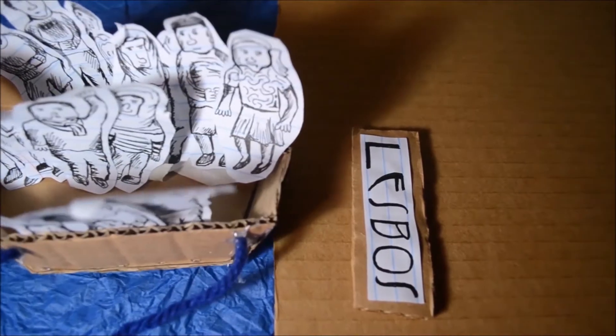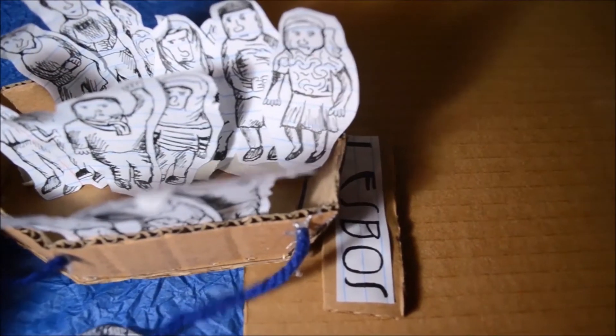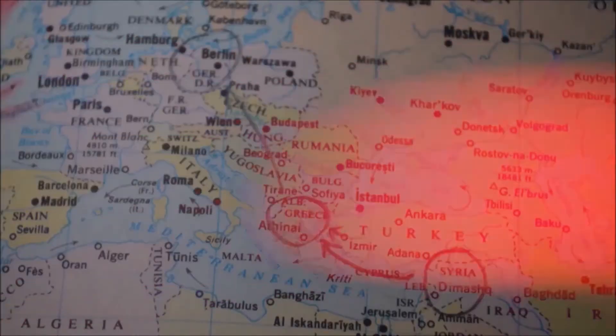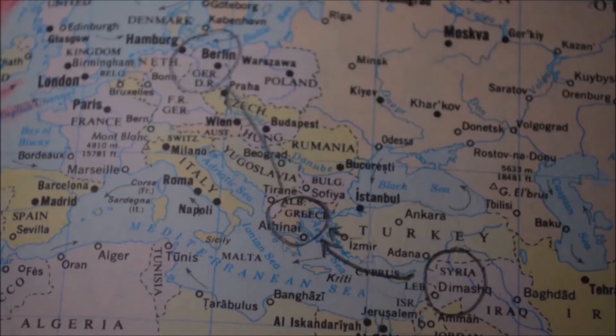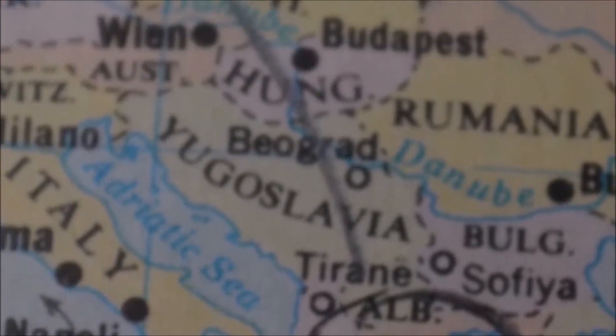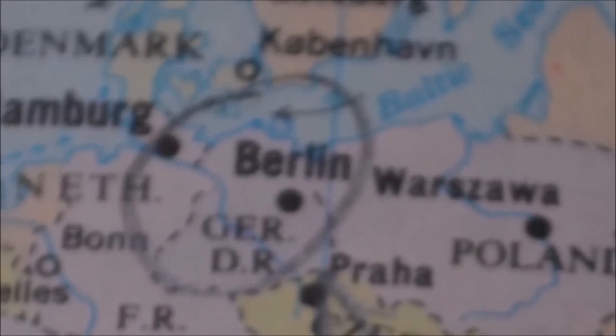After the harrowing passage, they reached Lesbos, a small island awaiting their arrival with open hands. After Lesbos, Mardini and her sister traveled to parts of Europe before arriving at Germany, settling in Berlin in 2015.